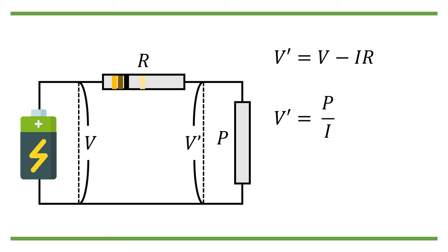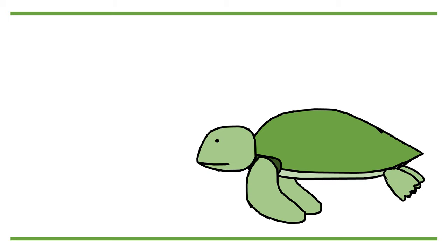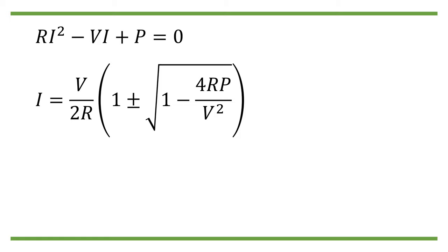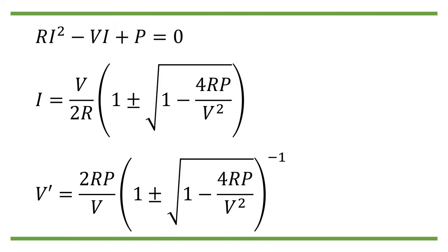So we should have V equals P divided by I plus IR. So the current of the circuit I is the solution to the quadratic equation RI squared minus VI plus P equals 0, which has solutions I equals V divided by 2R times 1 plus or minus square root of 1 minus 4RP divided by V squared. And therefore, V prime equals 2RP divided by V times 1 plus or minus square root of 1 minus 4RP divided by V squared to the power of minus 1.